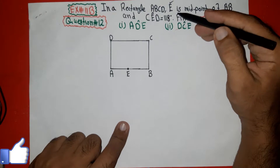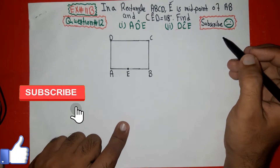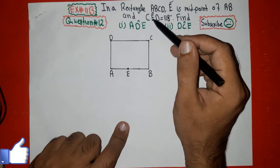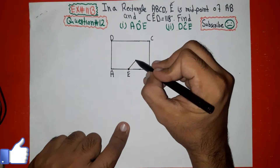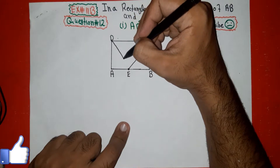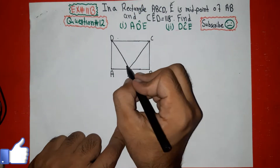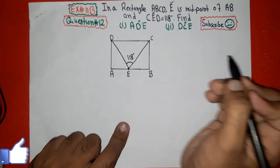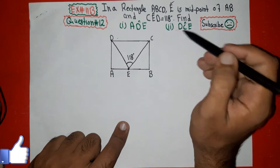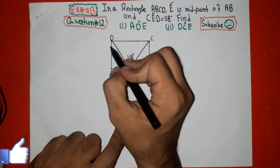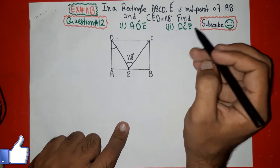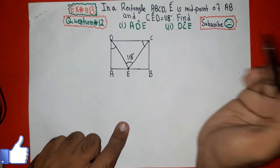Angle CED is given as 118 degrees. The angle CED is formed between points C, E, and D. I will draw lines joining point E with C and E with D. We have to find the value of angle ADE and angle DCE.